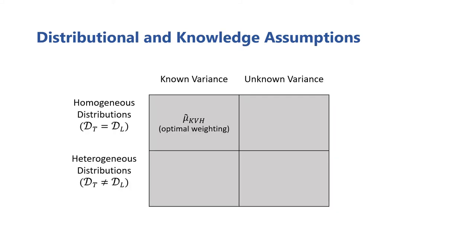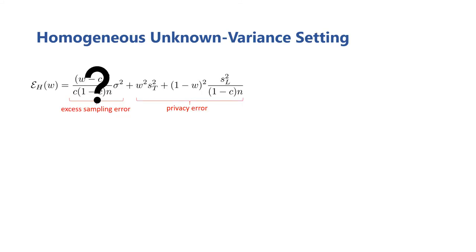Still staying in the homogeneous setting, we shift our attention to the case where the variance is unknown. Here, without additional statistical assumptions, an optimal weighting can't be chosen like we did before. Instead, we have to rely on a heuristically chosen weighting, which hopefully performs well. Recalling our hybrid family's error expression, we see that not knowing the variance means we don't know what sort of excess sampling error to expect.